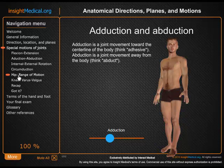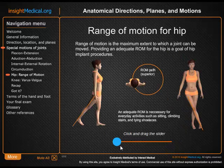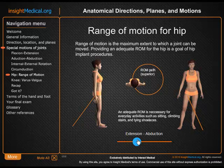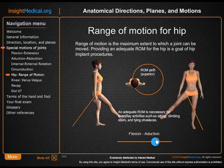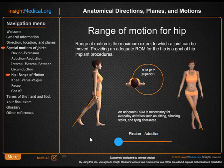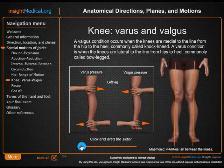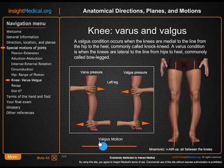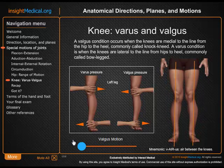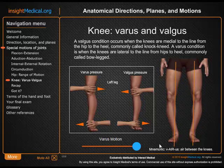We can talk about things like the hip range of motion, which might be a little difficult to understand just looking at still images, but here we get to actually play with it a bit. Varus and valgus motions and pressures on the knee are difficult to understand, but here we have our varus motion, here we have our valgus motion, and it's cemented into the brain quite quickly.